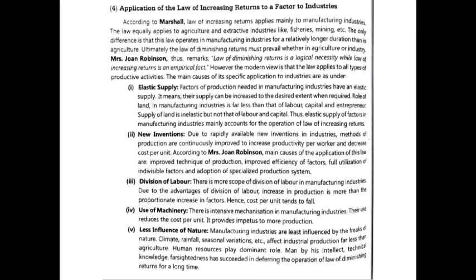Next is the application of the law of increasing return to a factor to industries. Increasing return to scale mainly applies to manufacturing industries, but the law equally applies to agriculture and extractive industries like fisheries and mining. The first point is elastic supply of factors of production — it means supply can be increased to the desired extent when required. In manufacturing industries, land plays a less critical fixed-factor role because labor and entrepreneurship can be increased more easily.